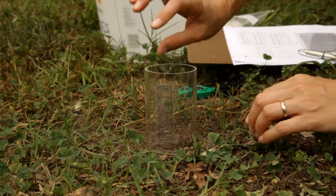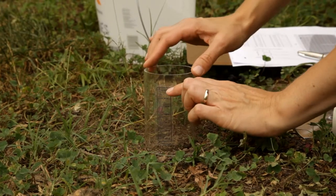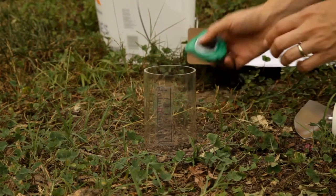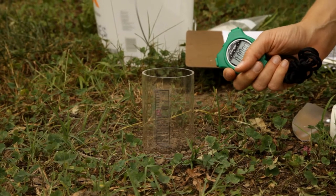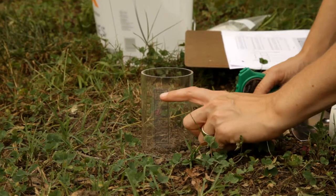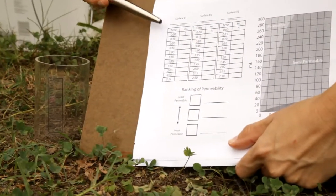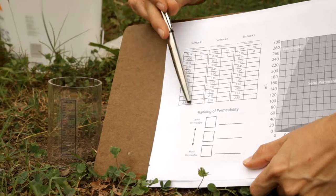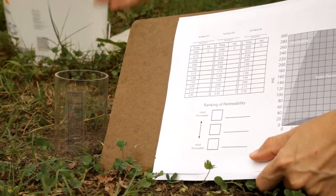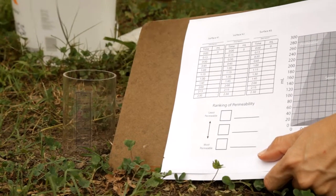Then take your water and pour it in until you get to the 0 milliliter mark, and then start a timer. Every 15 seconds you'll take a reading on the scale and write it down on your datasheet. At the end of two and a half minutes, or when your water runs out, you stop.